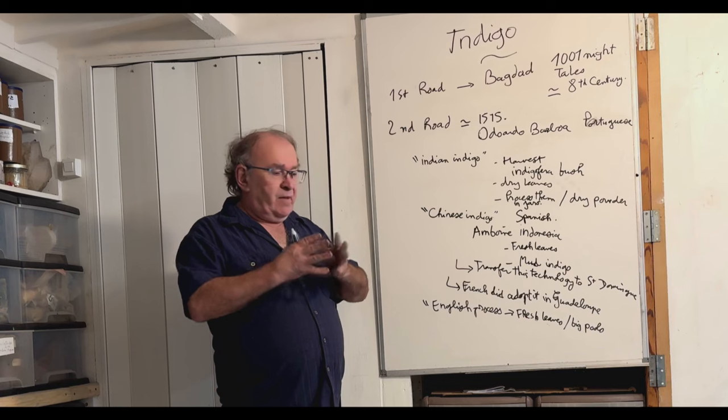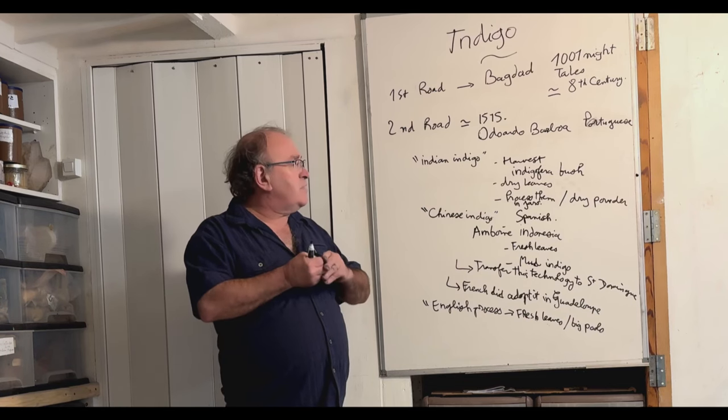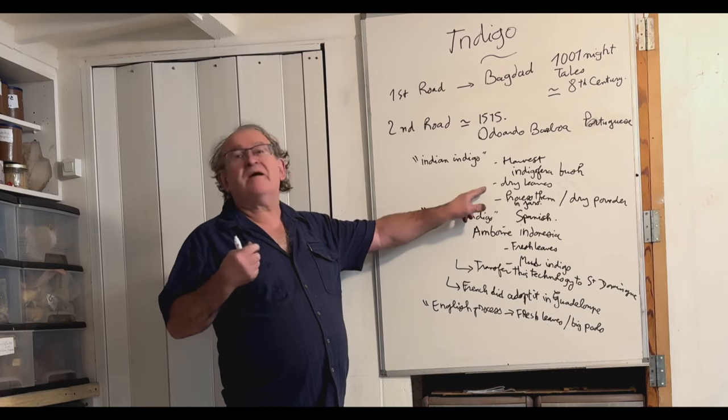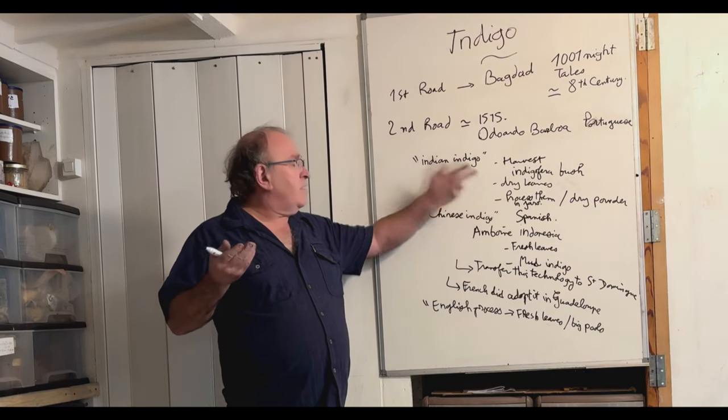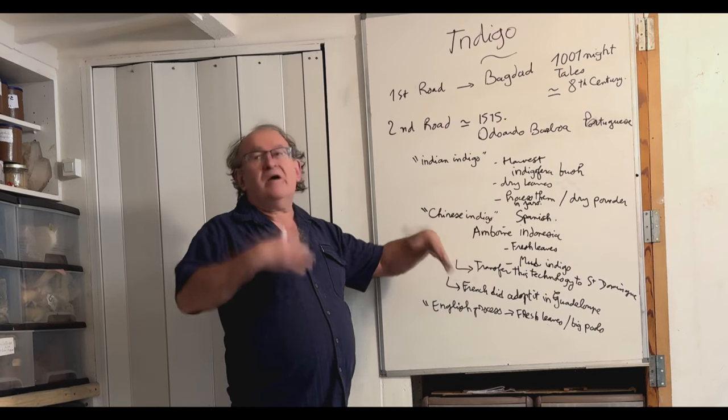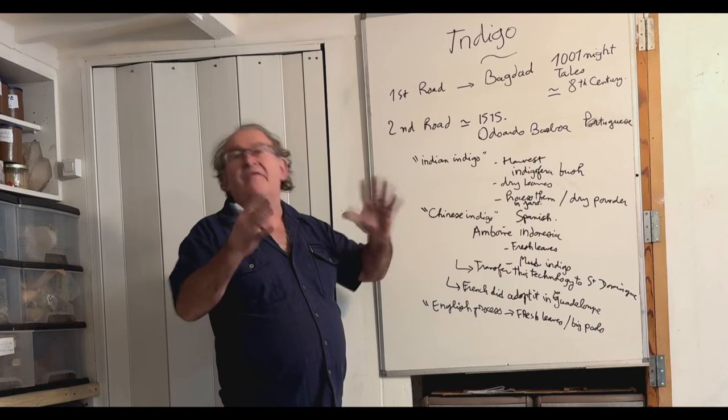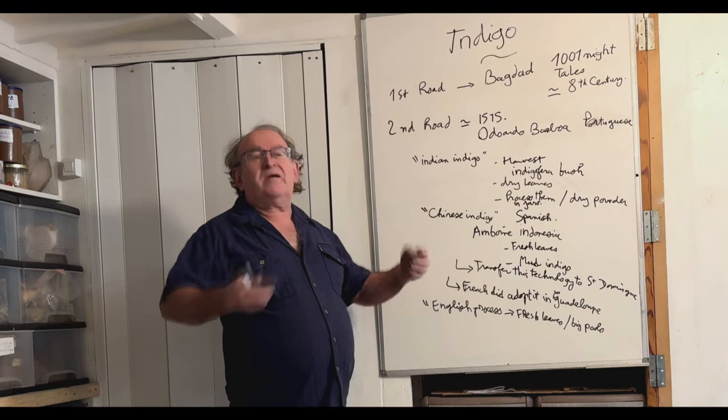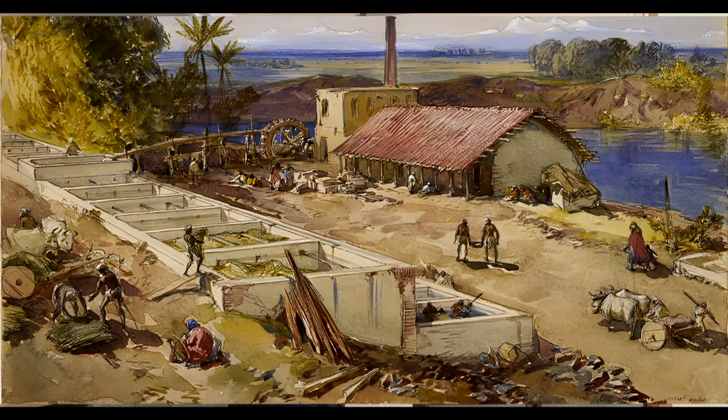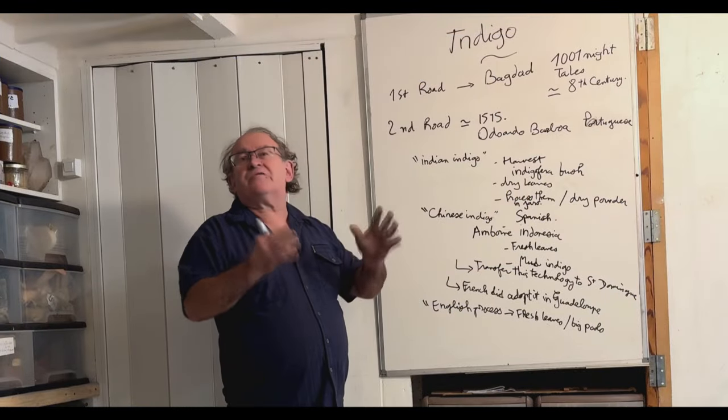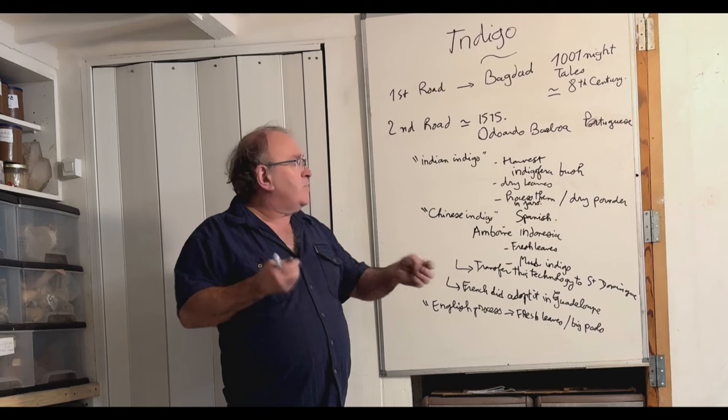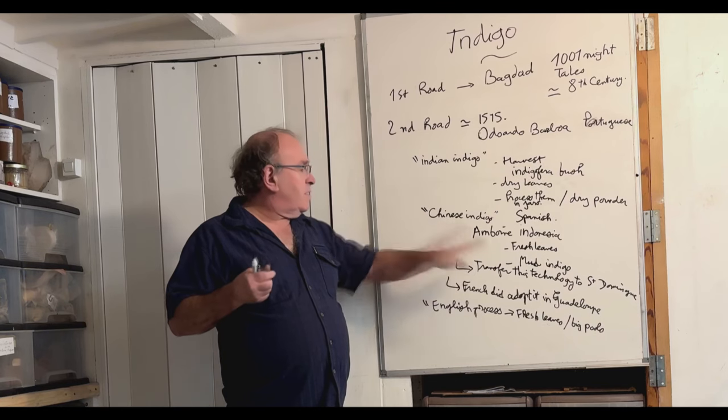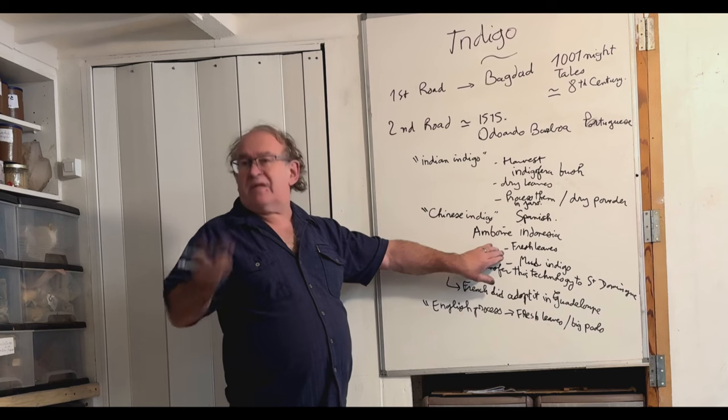What's the common process for all these? The common process is the fresh leaves process, because only one can be processed with dried leaves, the Indian one, the only one that India developed endlessly. So the Chinese had a range of different plants with only one mother process, one main process, that of fresh leaves. So if you process the fresh leaves by soaking, it takes more volume. The dried leaves is also one method for concentrating and using less water, but you cannot dry any kind of leaf to make the indigo.